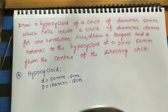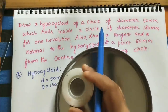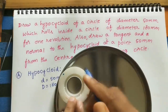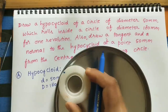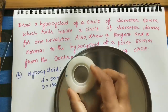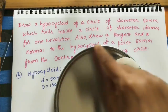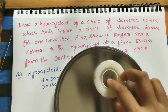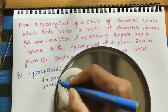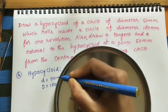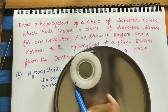Let us take one example. I have a bigger circle and a smaller circle with a point P marked on the circumference. This smaller circle is rotating inside the bigger circle, moving along the inner edge. The hypocycloid is the path traced out by this P point — initially P is marked here.